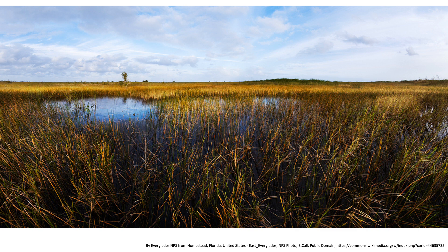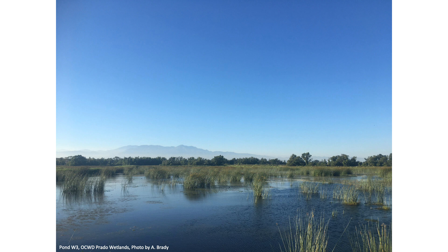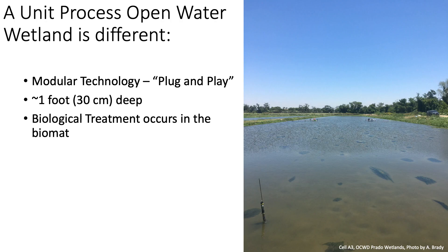When most people think of wetlands, they imagine something like the Florida Everglades or a pond with cattails or bull rush growing out of it. Generally, wetlands are approximately three feet deep and rely on plants for nutrient removal. Unit process open water wetlands were originally designed to degrade trace organic contaminants through UV light from the sun, also known as photolysis. In order to ensure that sunlight fully penetrates through the water column, these wetlands are only one foot deep and do not have any plants.